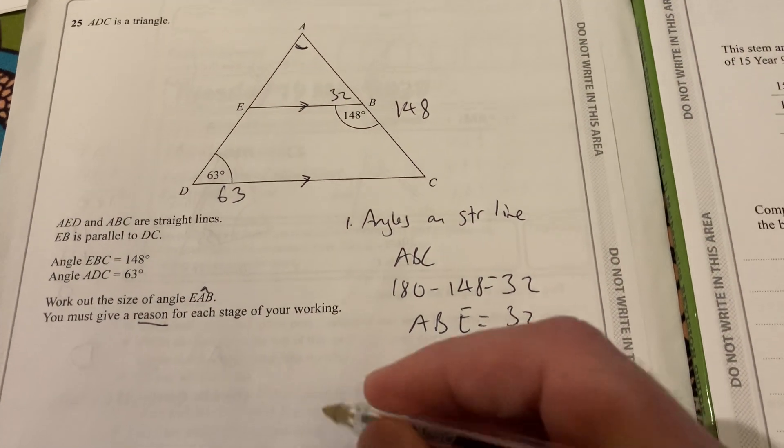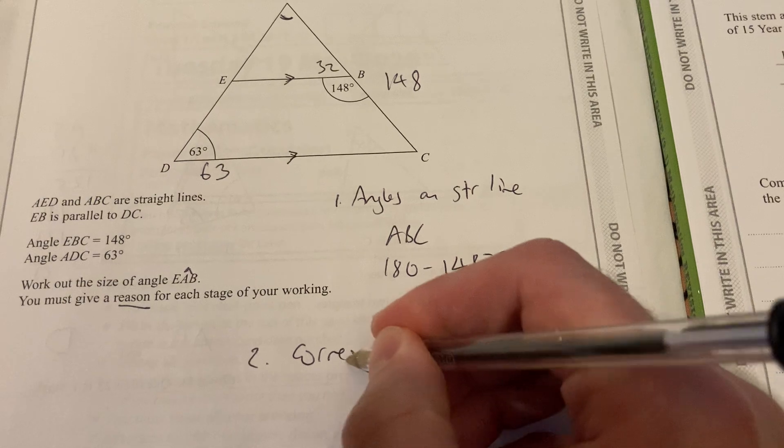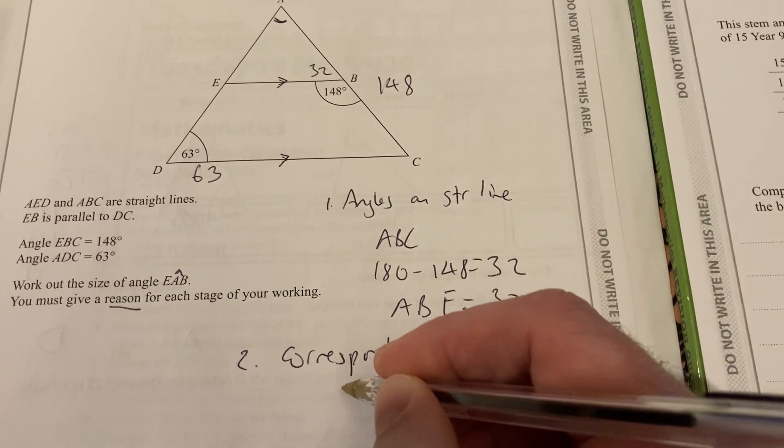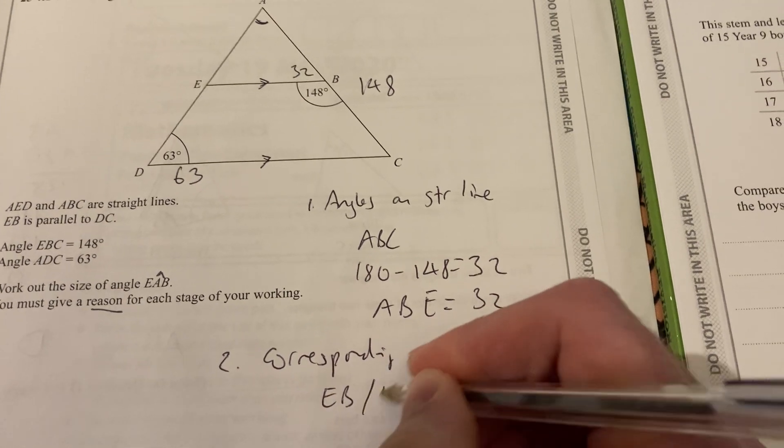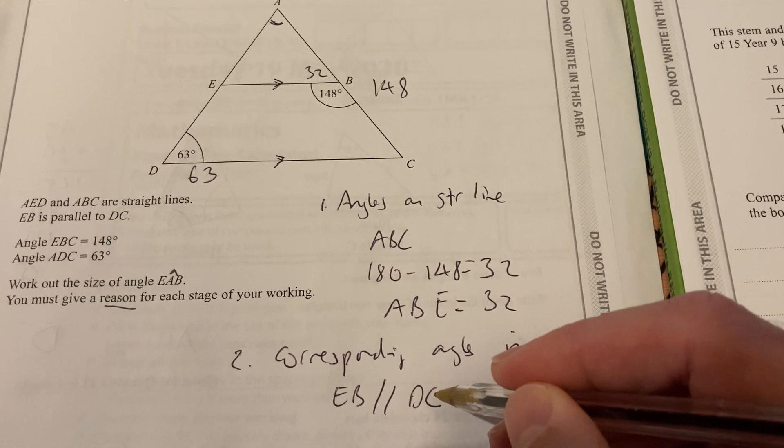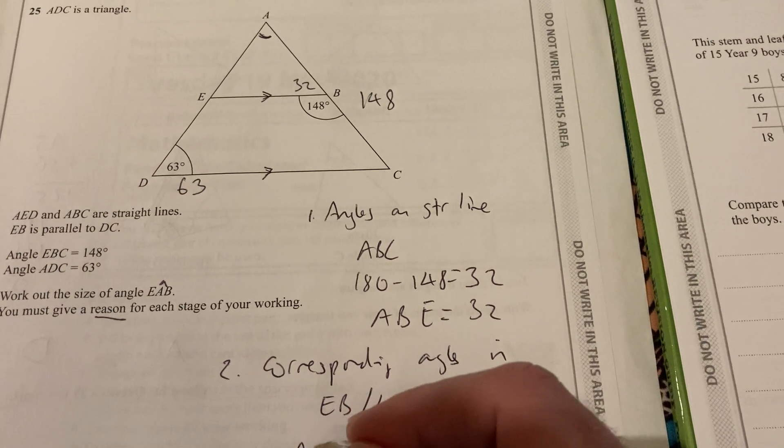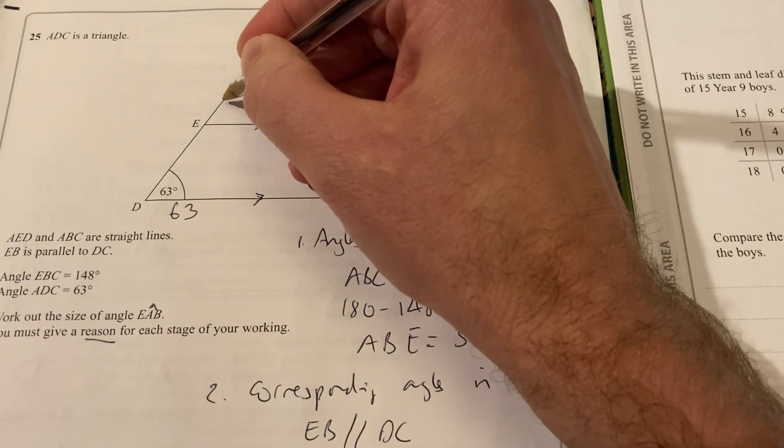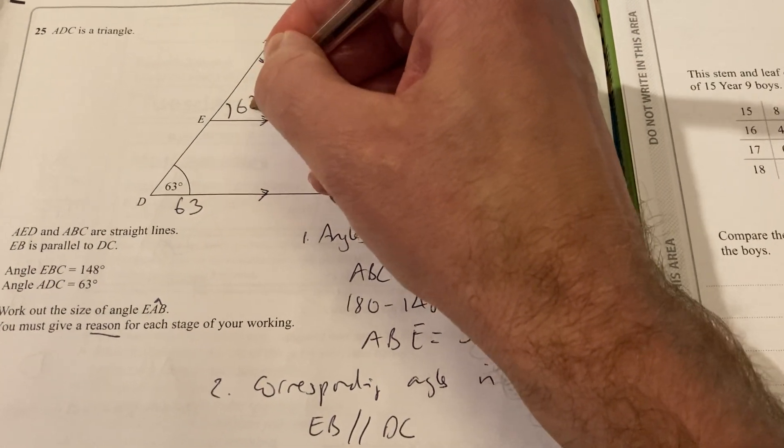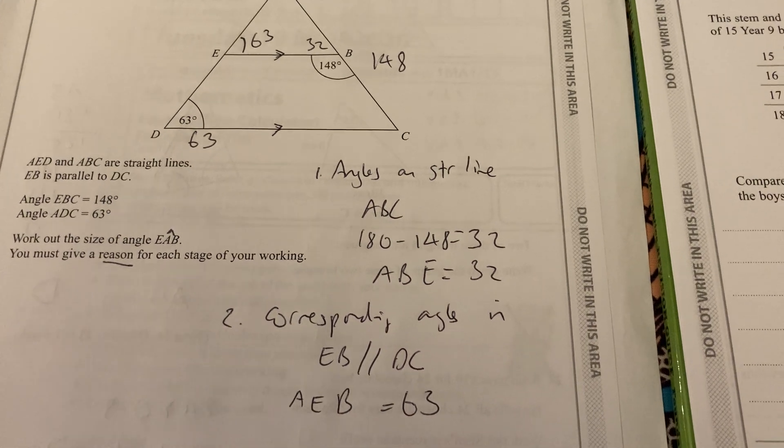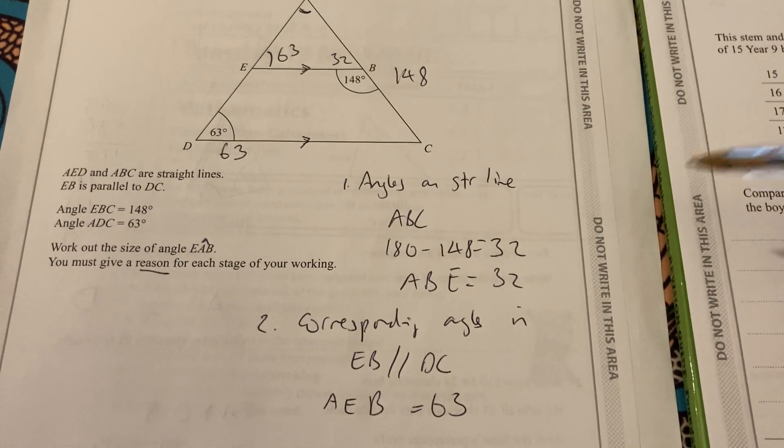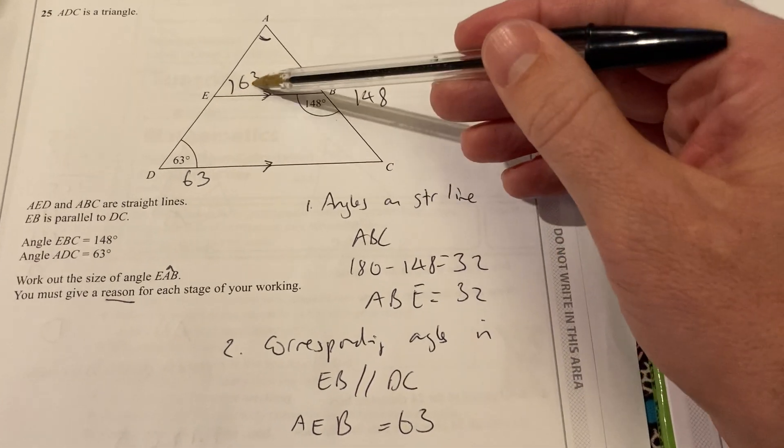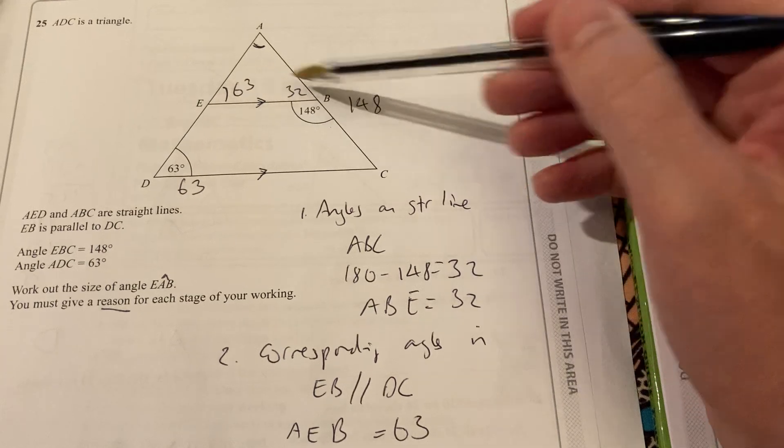Angles on the straight line, using a bit of shorthand, straight line ABC, 180 minus 148 gives me 32. So I know that ABE is 32. That's there. And then corresponding angles in parallel lines. EB parallel to DC makes angle AEB equal to 63.